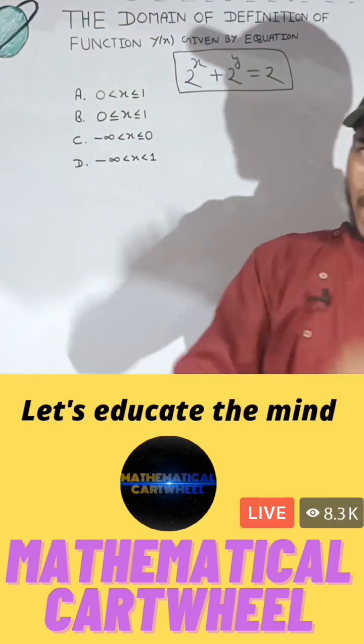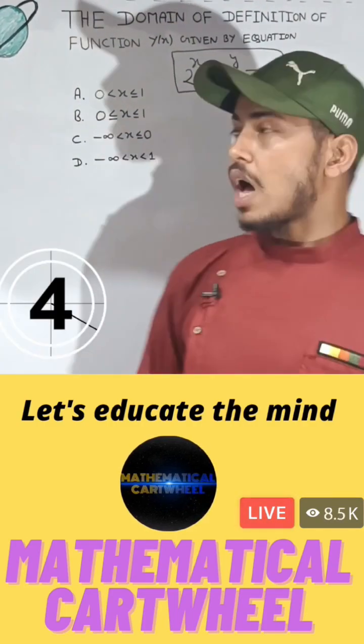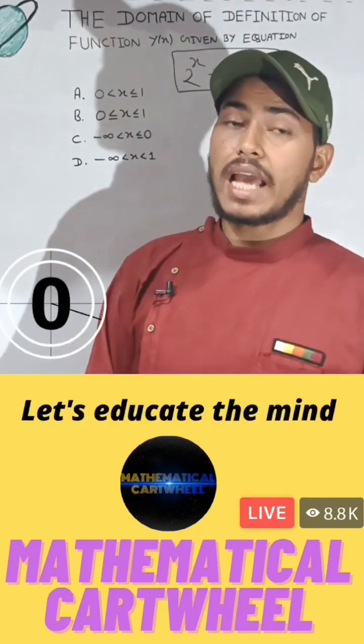Can you determine the domain of this function within five seconds? Your timer starts now and your options are A, B, C and D. Which one is the correct answer for this question?